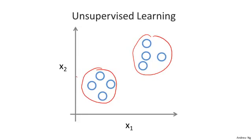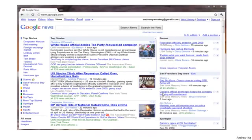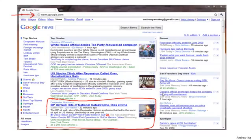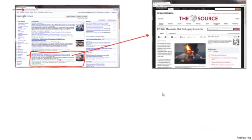One example where clustering is used is in Google News, and if you've not seen this before, you can actually go to this URL news.google.com to take a look. What Google News does is, every day, it goes and looks at tens of thousands or hundreds of thousands of news stories on the web, and it groups them into cohesive news stories. For example, let's look here. The URLs here link to different news stories about the BP oil well story. So let's say I click on one of these URLs.